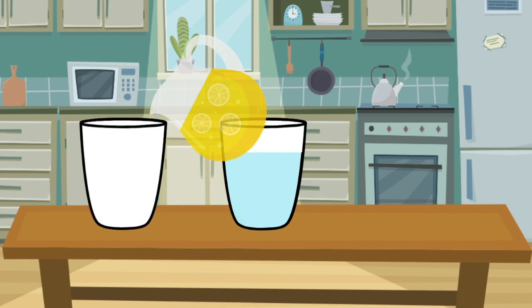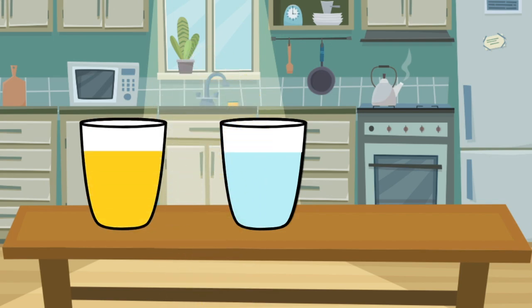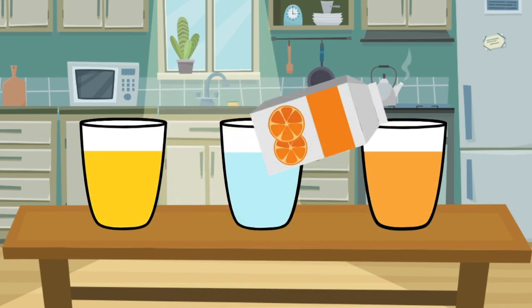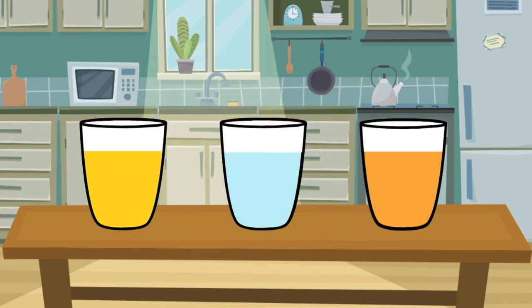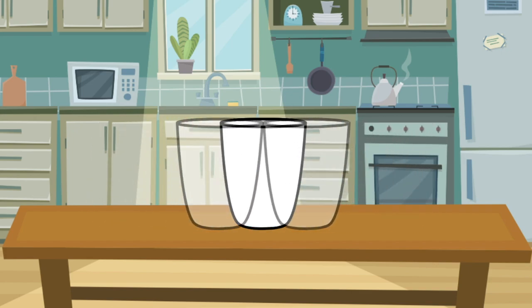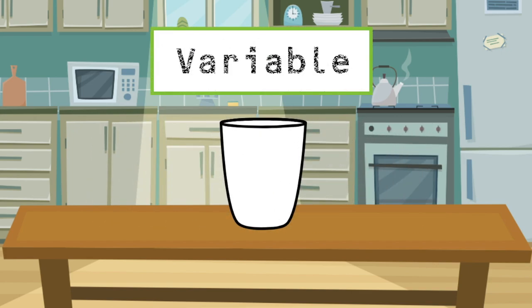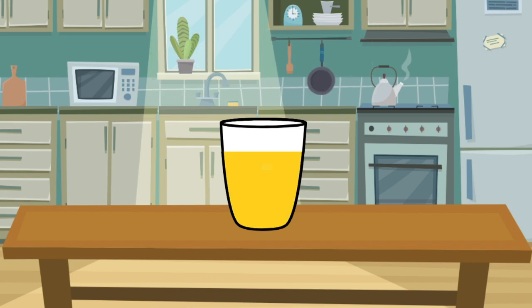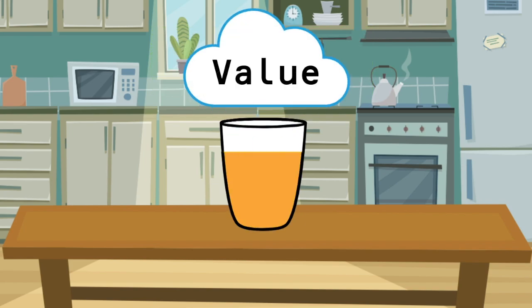It is simply the storage container for the liquid you chose to put in it. You can fill it up with lemonade, or orange juice, or any other liquid, and it still won't change the cup itself. In this example, your cup acts just like a variable, and the liquid you put into it is a value.